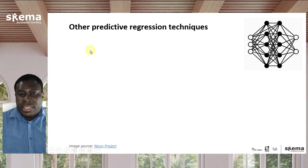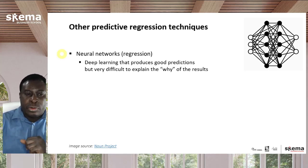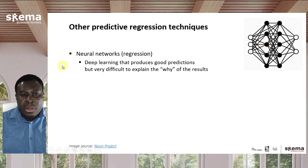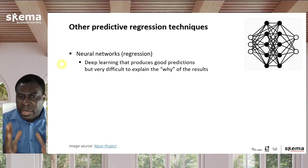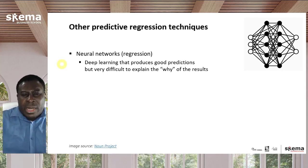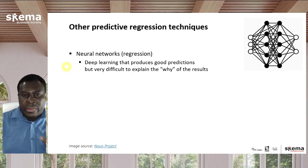There are some predictive regression techniques that are not linear regression at all and use completely different approaches to predict specific numbers. The two main categories are neural networks — this is where deep learning falls under. Neural networks simulate the function of neurons in the brain to make predictions, and deep learning has pretty good predictions especially when you have very large datasets. But one of its main shortcomings is that it's quite challenging to explain how you got the results, so neural networks are very weak on explainability compared to linear regression.